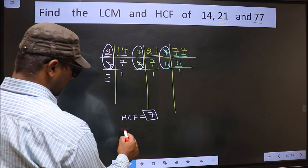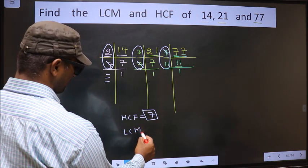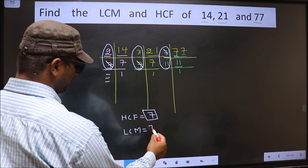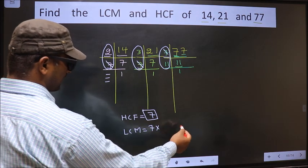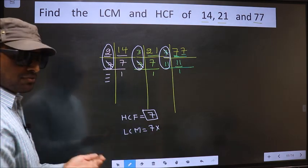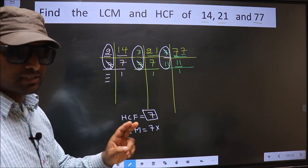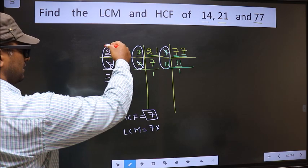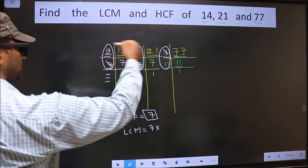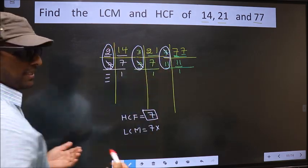Now to get LCM, whatever HCF we got, to that we should multiply by the numbers which appeared either once or twice in these three places.